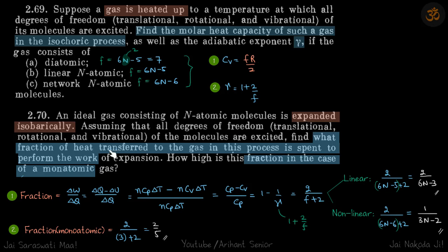In isobaric expansion, the fraction of heat spent on work is ΔW/ΔQ. Since ΔQ = ΔW + ΔU, the fraction becomes (ΔQ - ΔU)/ΔQ = (nCpΔT - nCvΔT) / (nCpΔT) = (Cp - Cv)/Cp = 1 - 1/γ. Since γ = 1 + 2/f, this simplifies to 2/(f + 2).